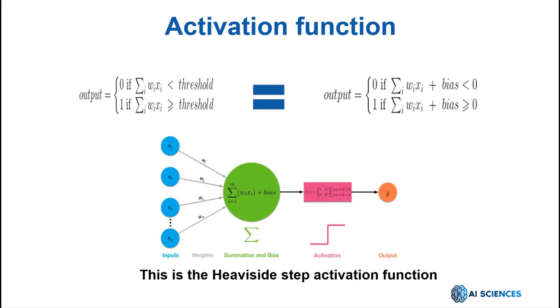In the mathematical language, the perceptron algorithms work like this. The output is equal to 0 if the sum of the weight times the value of the variable is smaller than a threshold. In the same way, the output will be equal to 1 if the sum of the weight times the value of the variables is bigger than a threshold.